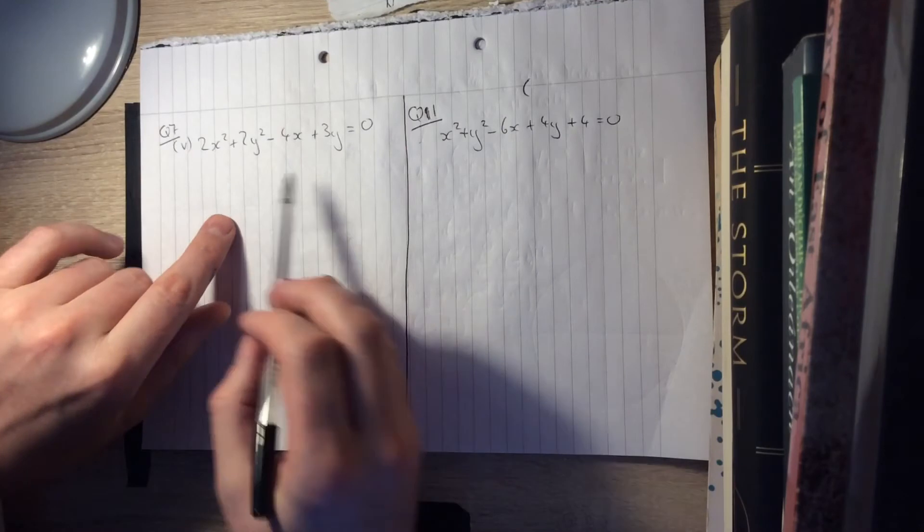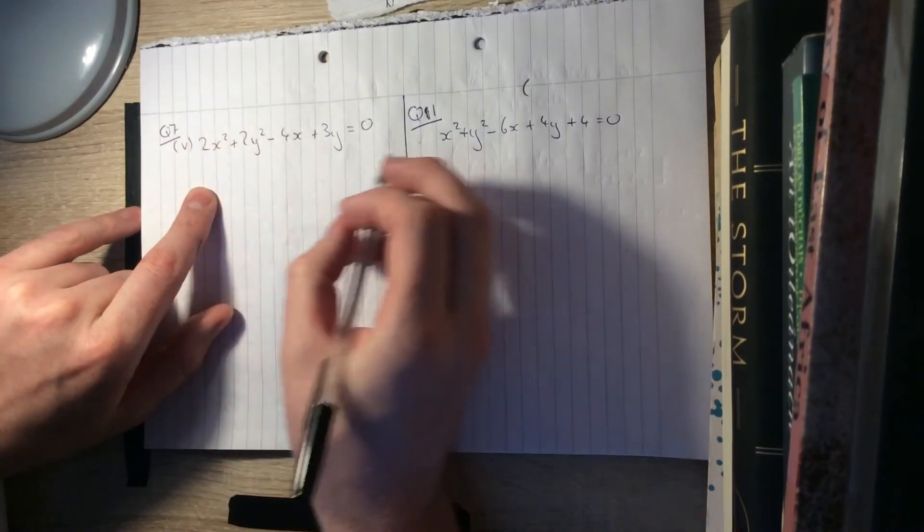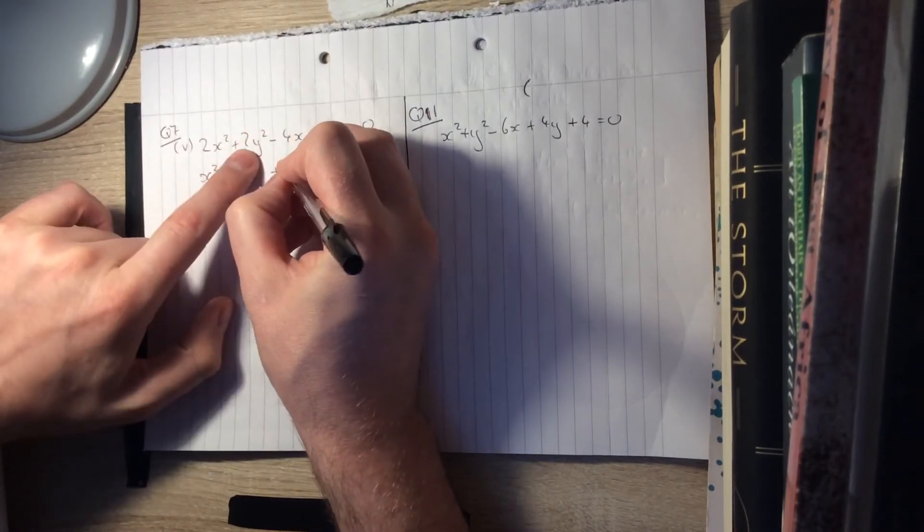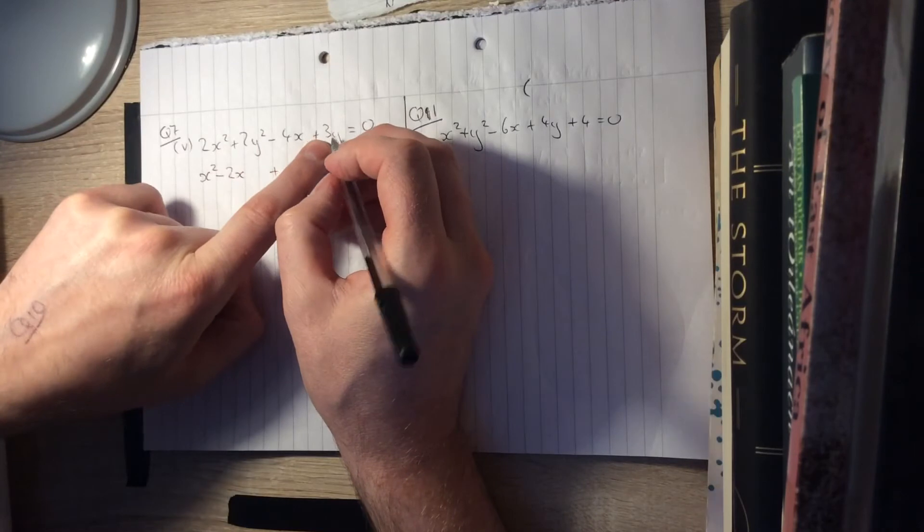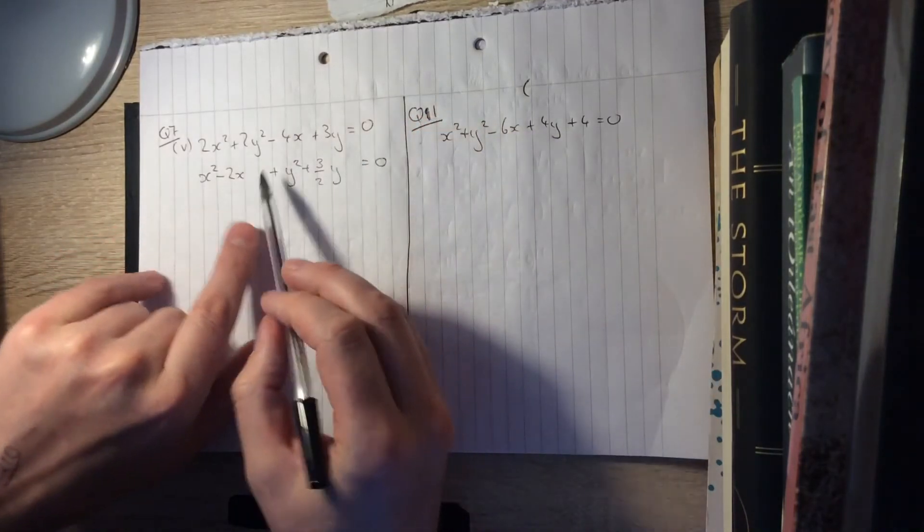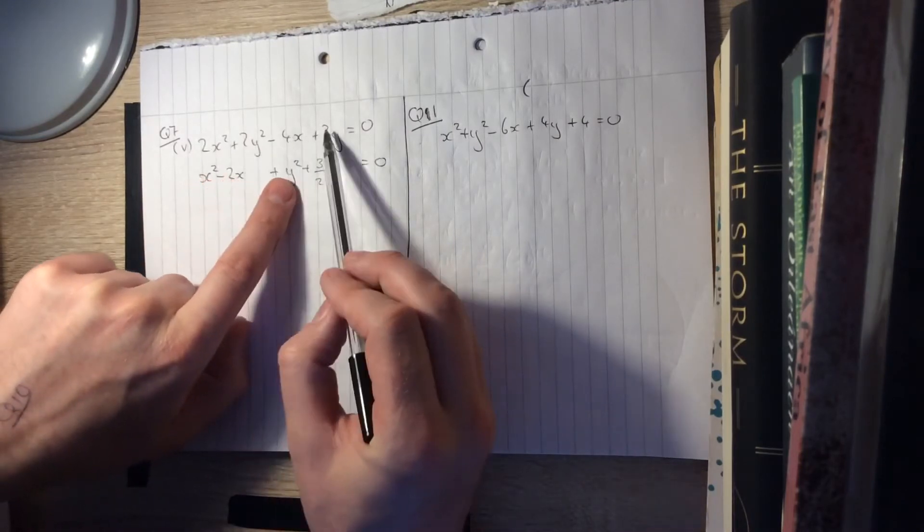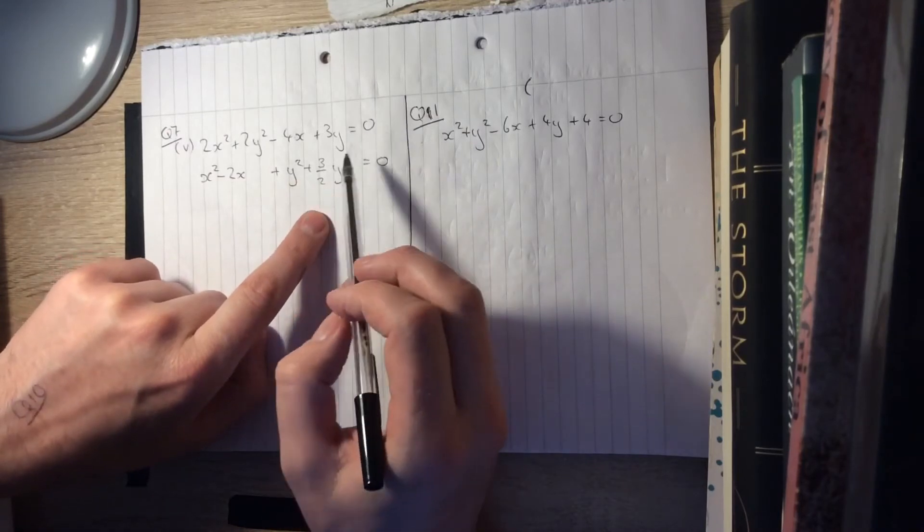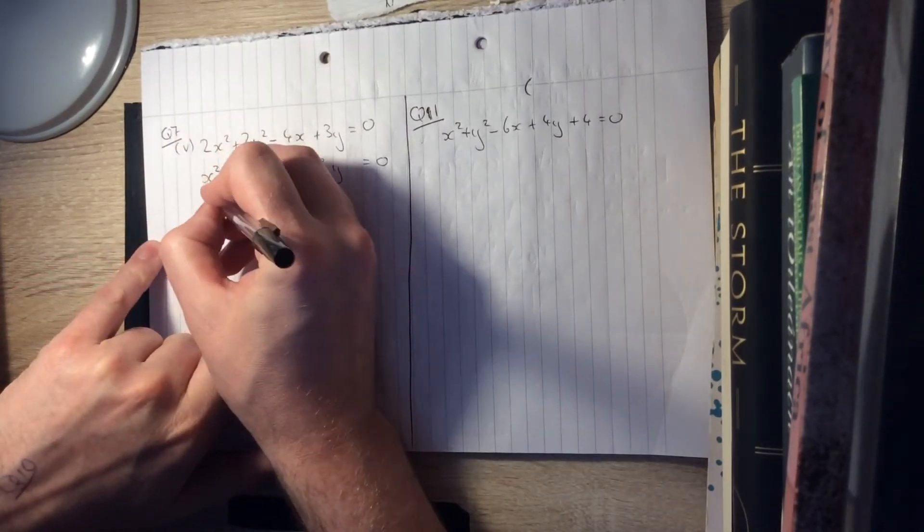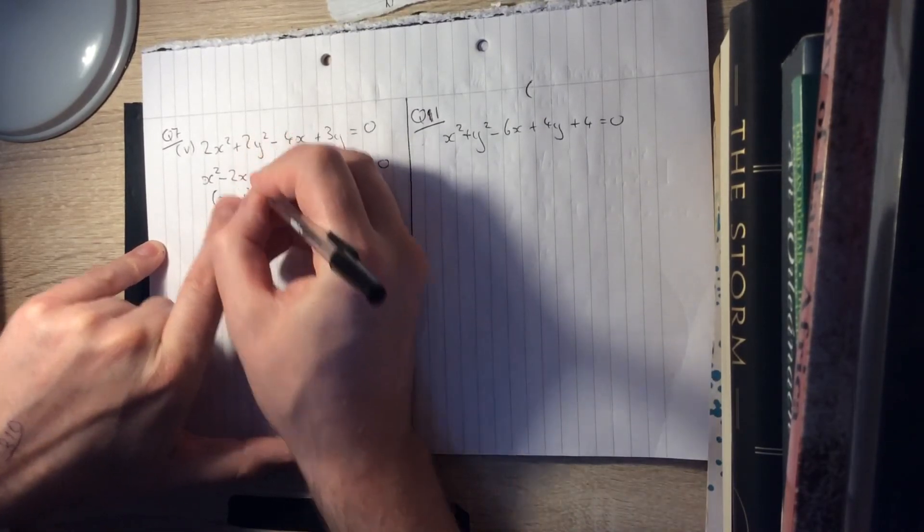7 part 5, same type of question, slightly different in that you've got these 2's everywhere, you're not allowed to have them in front of the x squared and the y squared, so the first thing we need to do is divide through. So we'll get x squared minus 2x plus y squared, and that's going to be plus 3 over 2y, equals 0. So I've rearranged at the same time as I've divided by 2, divide that by 2, divide that by 2, divide this by 2, divide this by 2. I haven't had to move anything over this time, because we don't have any loose term by itself here, which is fine. Completing the square here, well, half of minus 2 squared, that's going to be x minus 1 squared.